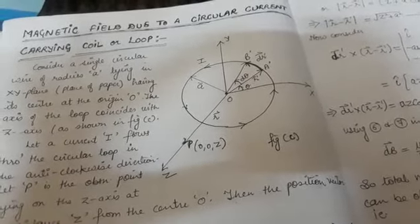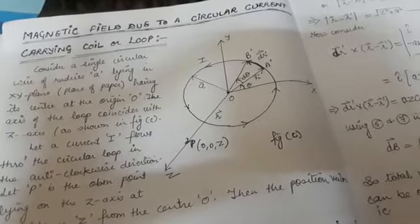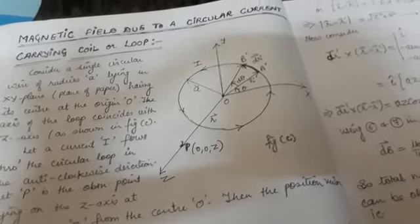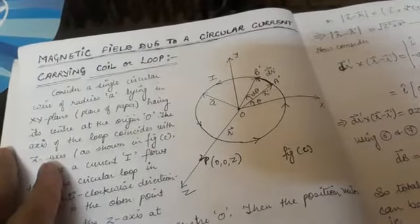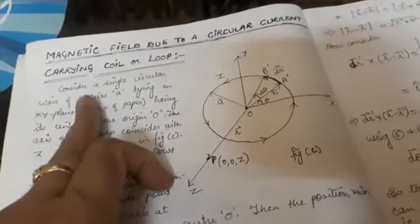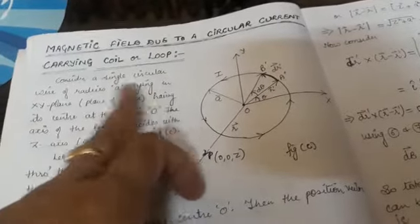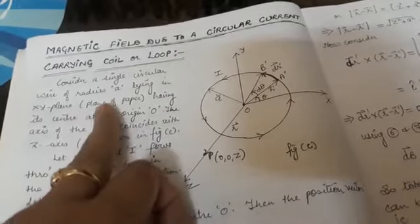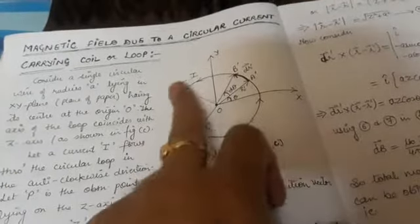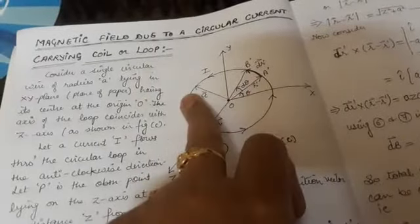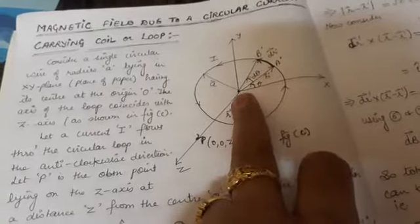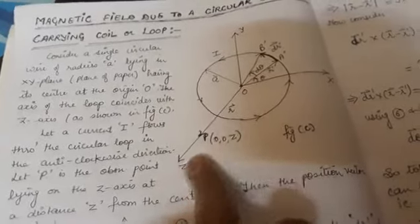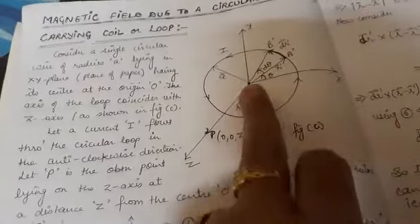In today's video I am going to discuss the magnetic field due to a circular current-carrying coil, or loop. I have considered a single circular wire of radius A lying in the x-y plane. The circular loop's plane lies in the x-y plane and its center is O, so O-z is the axis of this loop, passing through its center and perpendicular to its plane.